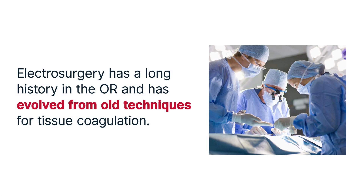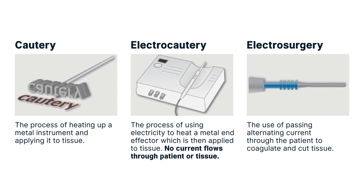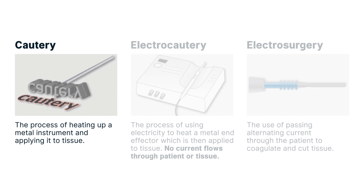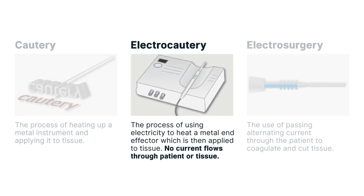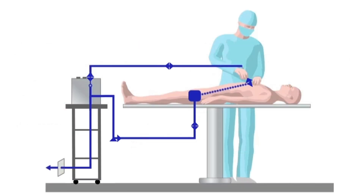Electrosurgery has a long history in the OR and has evolved from old techniques for tissue coagulation. Each technique is distinct and uses a different approach to generate heat to achieve hemostasis. Cautery is the process of heating up a metal instrument and applying it to tissue. Electrocautery uses electricity to heat a metal end effector, which is then applied to tissue. Monopolar energy is classified as electrosurgery — it passes alternating current through the patient to coagulate and cut tissue. The technology is often commonly referred to as BOVI, the last name of the inventor. Electrosurgery systems are designed to safely use electricity to heat tissue and control the current to achieve the desired tissue effect.